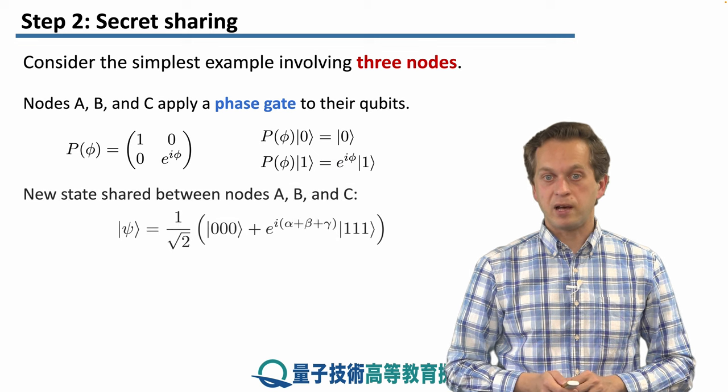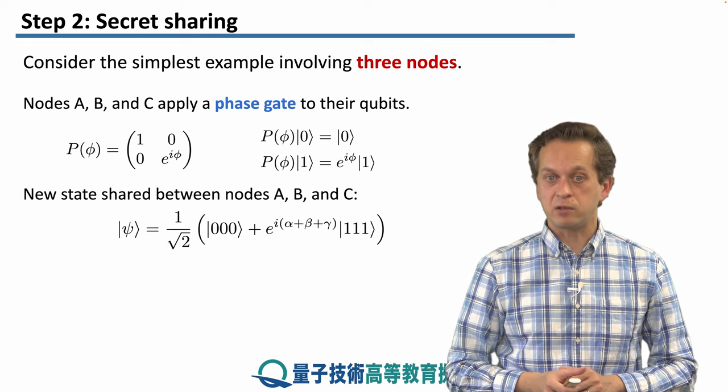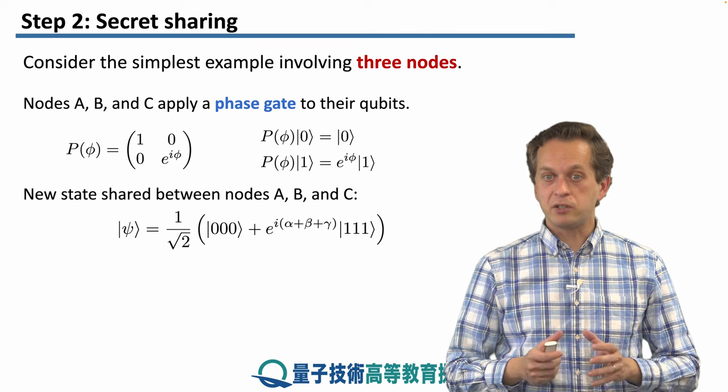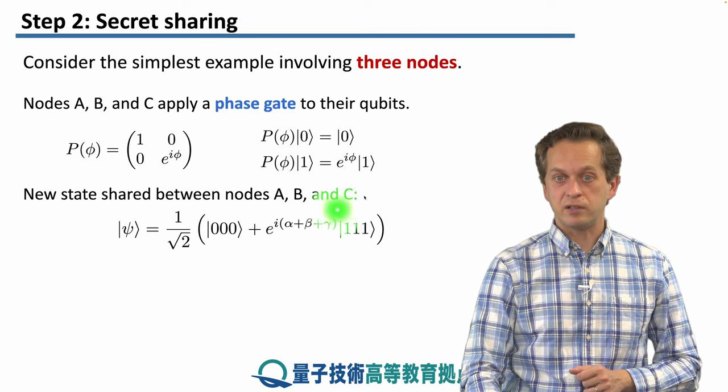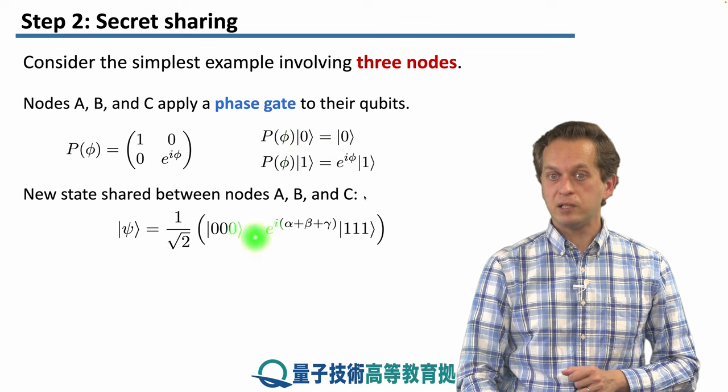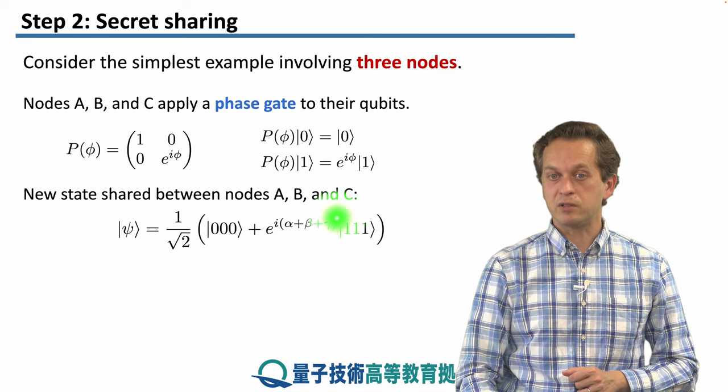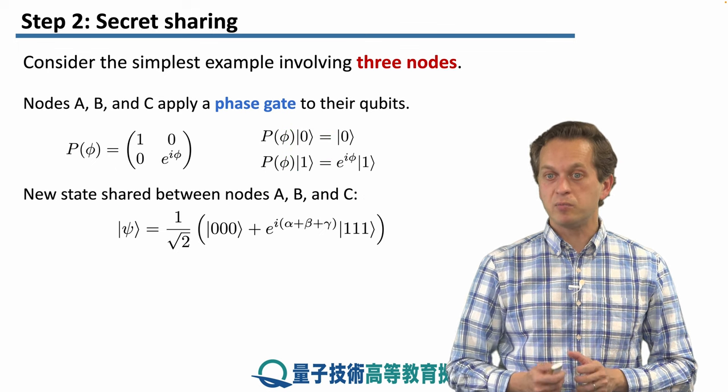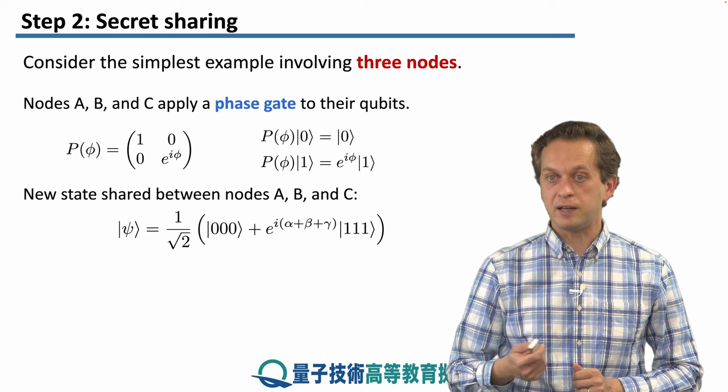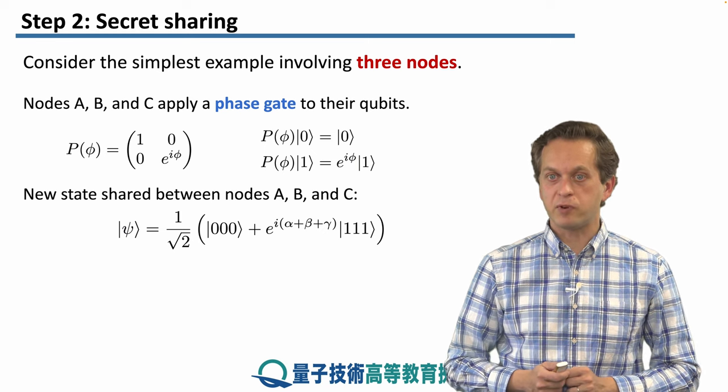So after the nodes apply their phase gates based on their values of α, β, γ, the shared state is now different. It's this GHZ looking state, but with a relative phase in between those zeros and ones, given by the sum of α, β, and γ. You can check this for yourself quite easily.